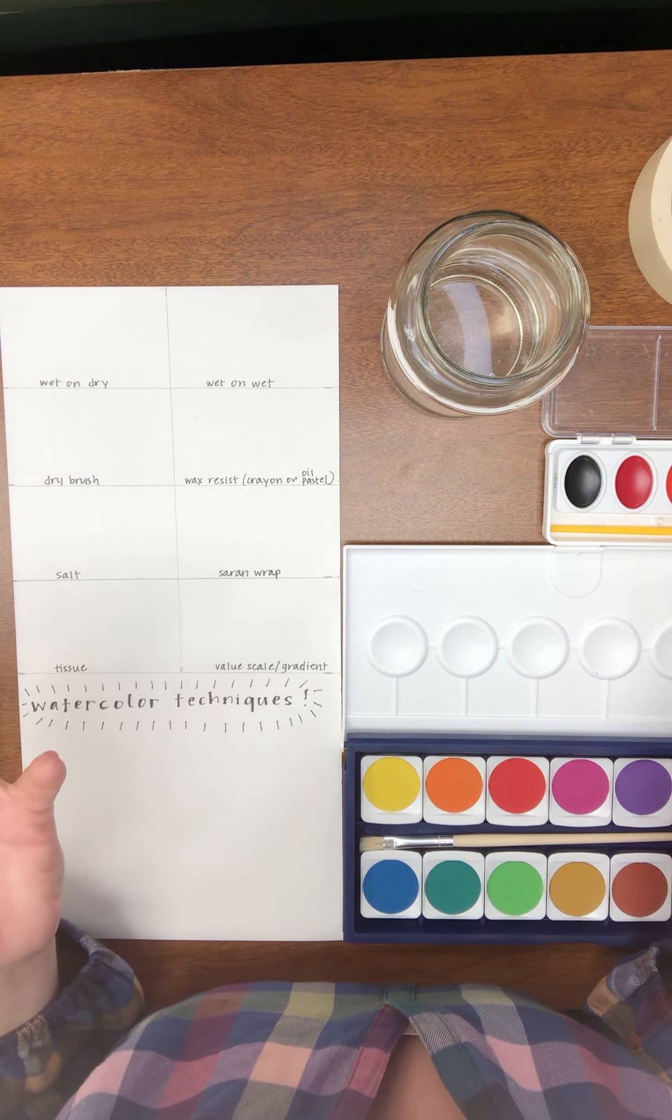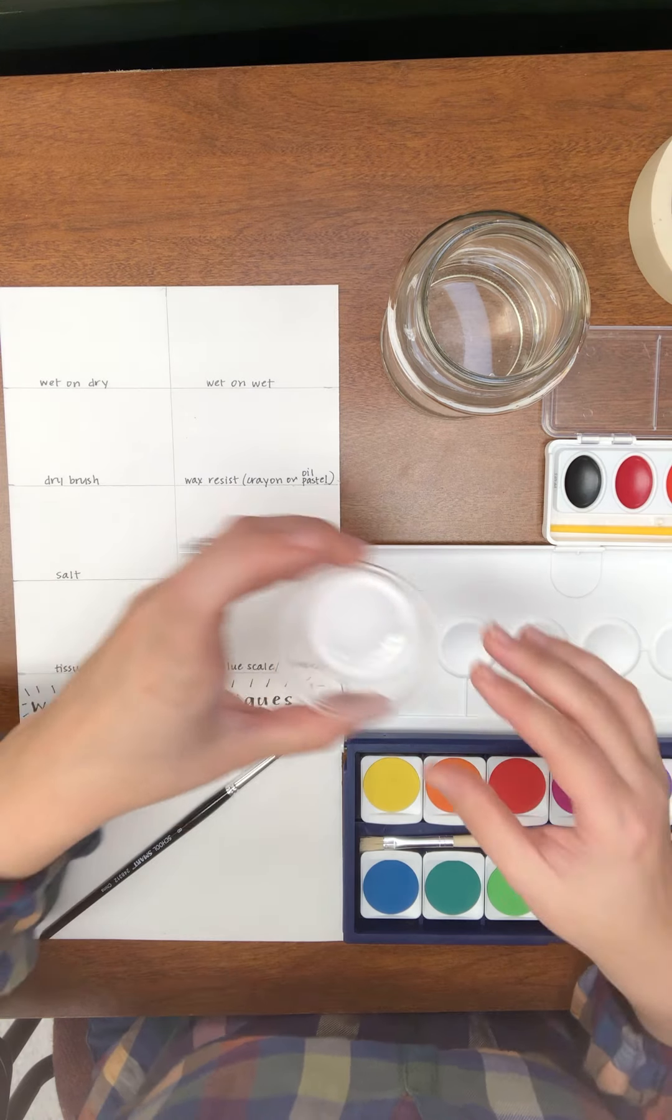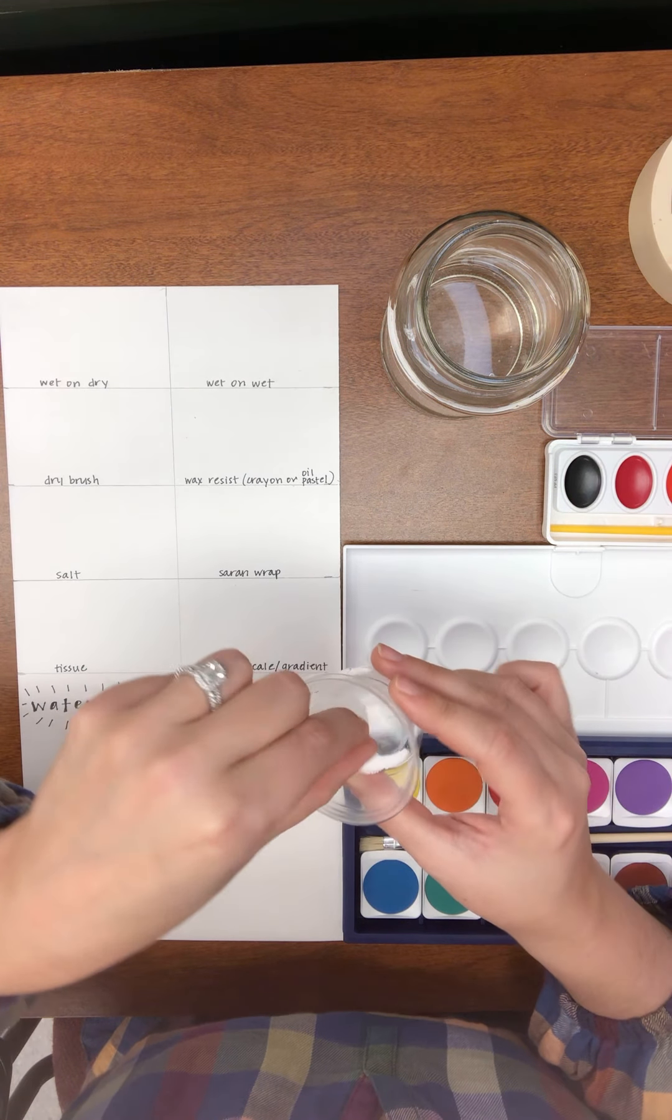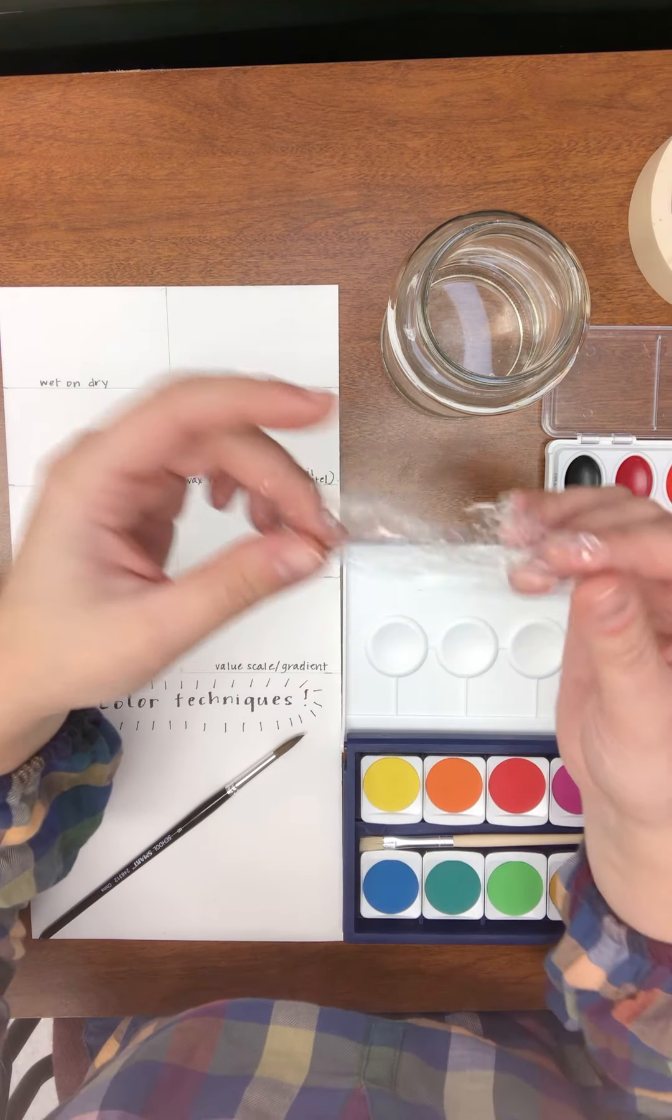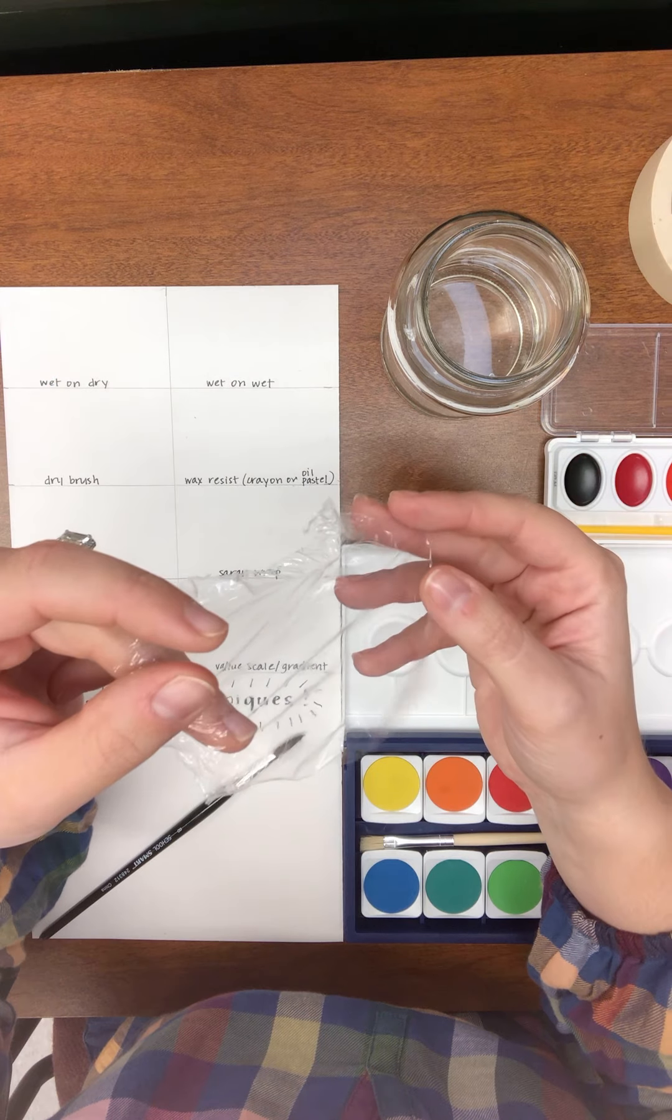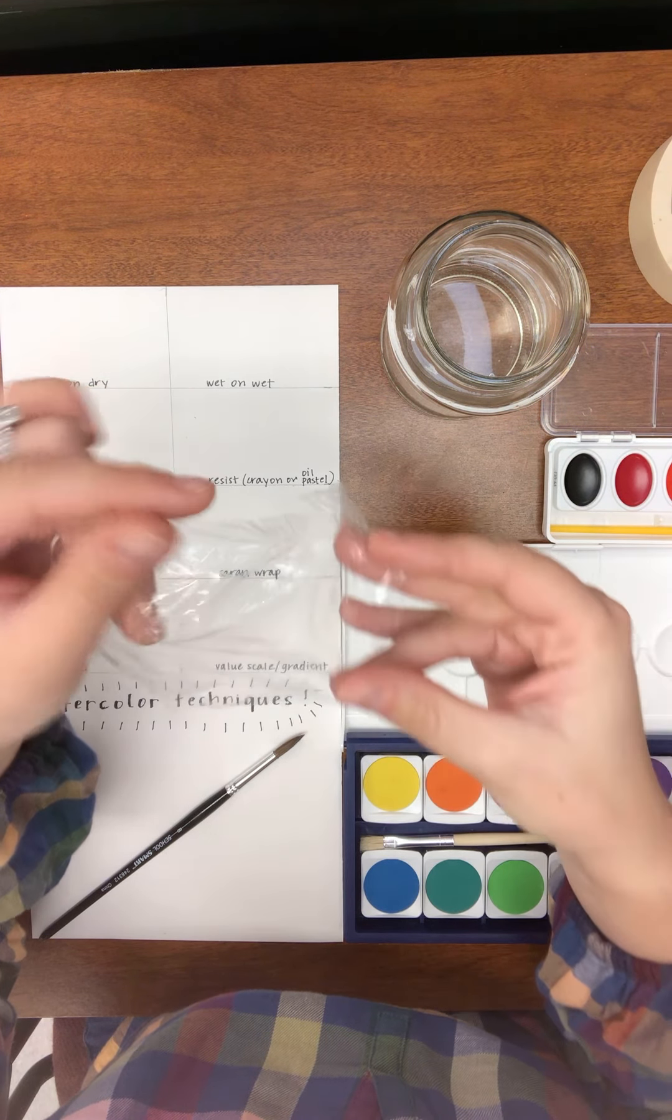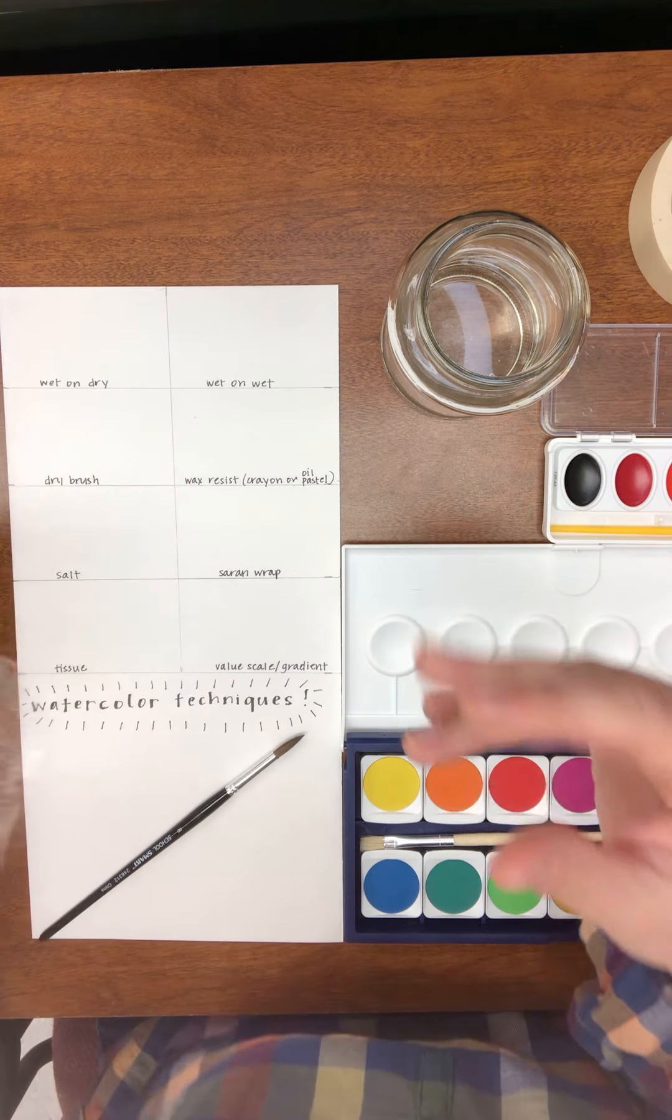I also have some unusual supplies with me as well. First one is salt. This is the type of salt that you probably have in your kitchen. We are going to actually be sprinkling that on part of our painting. I have a small piece of saran or plastic wrap so if you have that at your house you definitely want to take some of that out. You could also use a ziploc bag that's been cut up. That's totally fine.